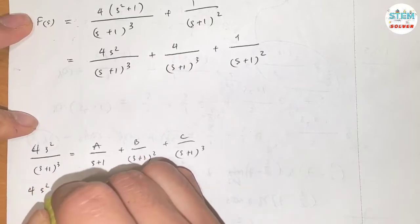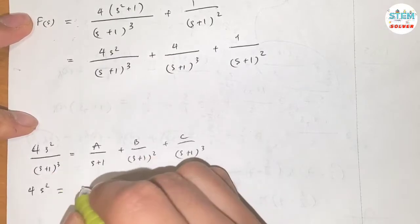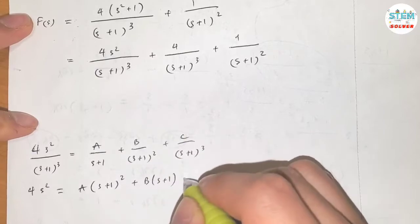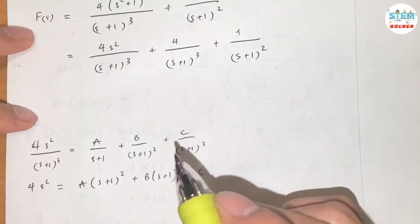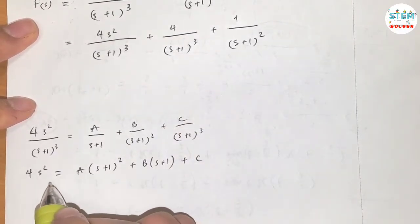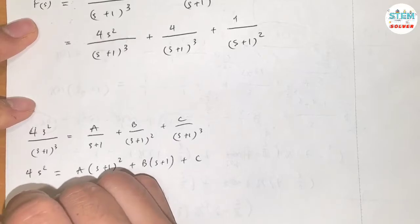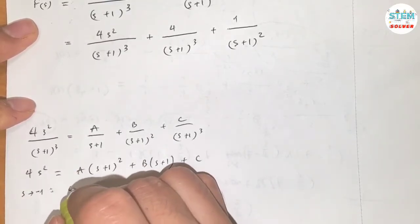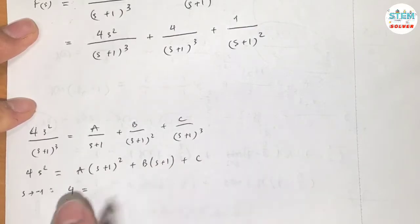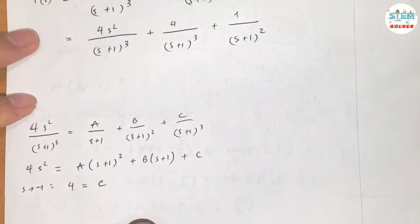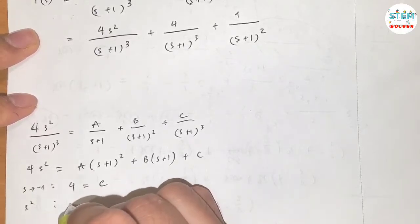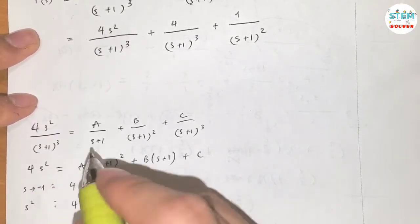The LCD is (s plus 1) cubed, so multiplying both sides gives 4s² equals A(s plus 1)² plus B(s plus 1) plus C. If I let s approach negative one, the left side gives 4 and the right side reduces to just C, so C equals 4.